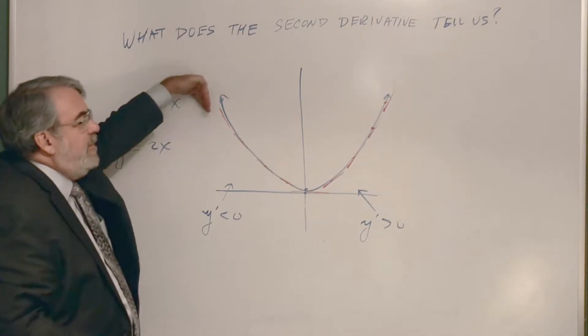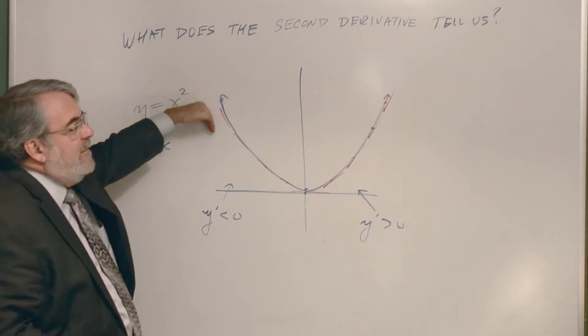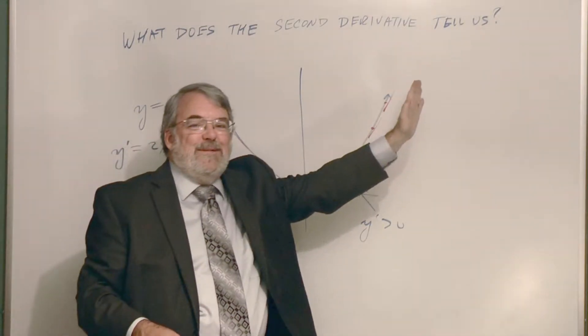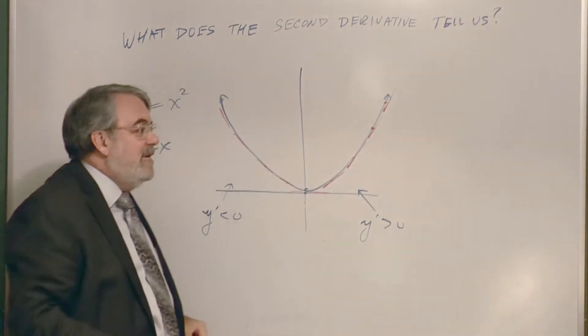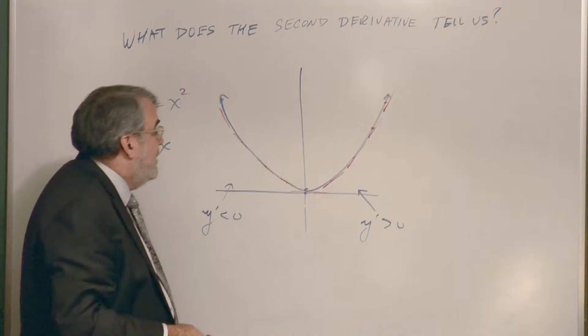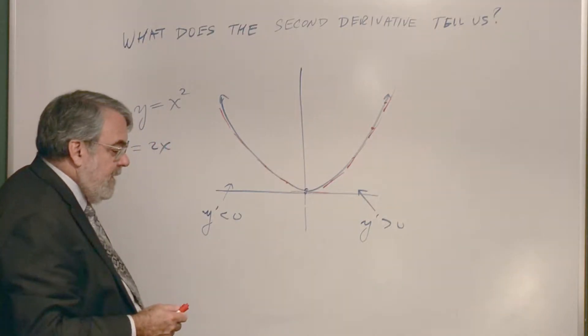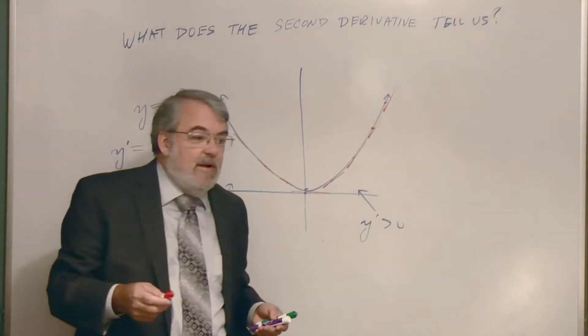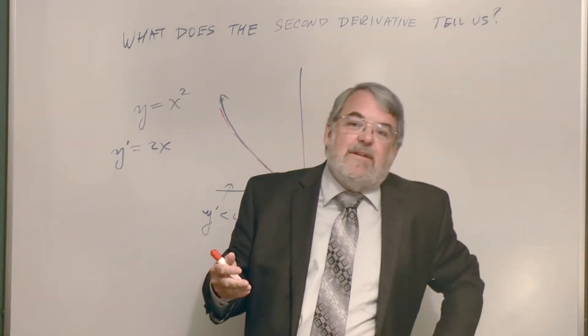And so the slopes are going from large negative numbers to large positive numbers. In other words, it's always increasing. The slope is always increasing. And so when the slope is always increasing, that means its rate of change has to be positive.